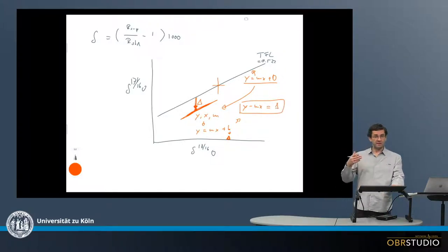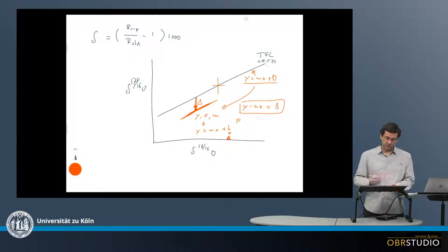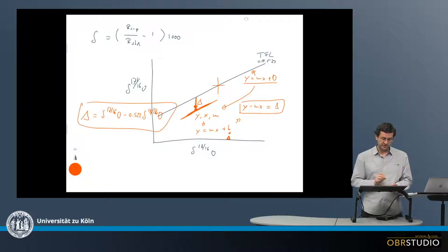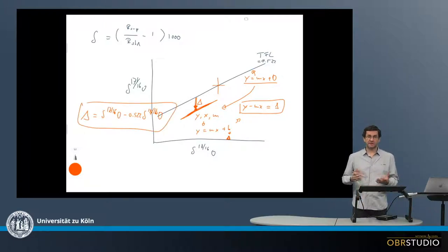This is the equation how we calculate capital delta. To write this more clearly, capital delta is delta 17-16 O minus 0.522 times delta 18-16 O. This is the final equation to calculate the capital delta.